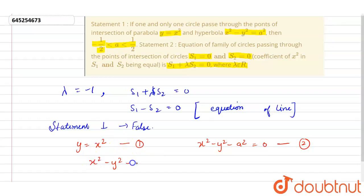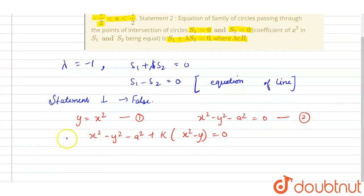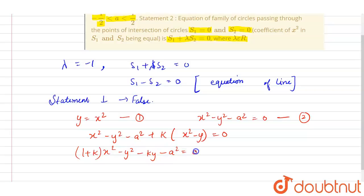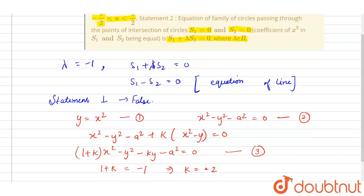The family of curves is: x squared minus y squared minus a squared plus k times (x squared minus y) equals 0. Simplifying, we get (1 plus k)x squared minus kx squared minus y squared minus ky minus a squared equals 0 — call this equation 3. For equation 3 to represent a circle, the coefficient of x squared must equal the coefficient of y squared. From this condition we get k equals minus 2.